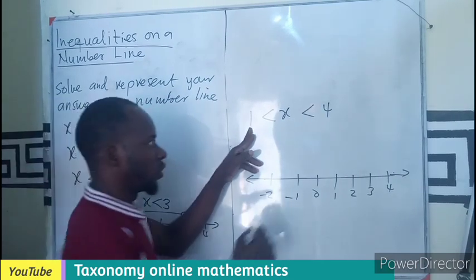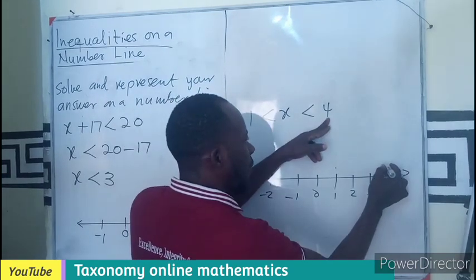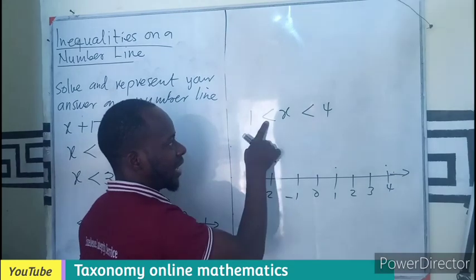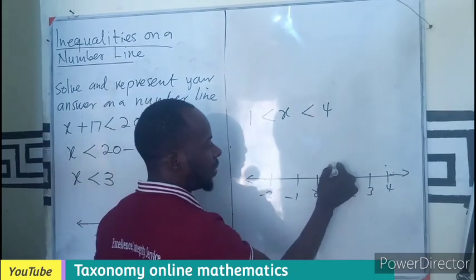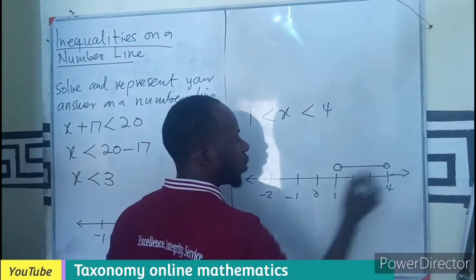So, now, the number is 1. So, stand on 1. Another number is 4. Stand on 4. Is any condition? No. So, empty circle. Any condition? No. Empty circle. So, draw it together.